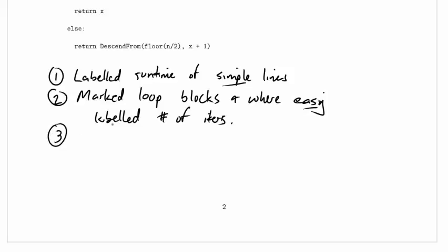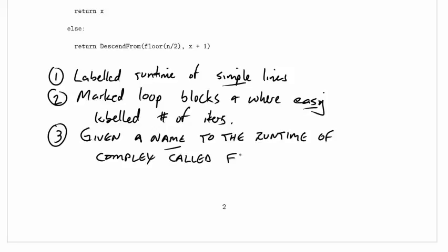Okay, what else have we done? We've given a name to the runtime of complex called functions. So we called this function descendfrom. It's not obvious how long descendfrom takes, so we just gave a name to the runtime of descendfrom. And all this gives us a great start.